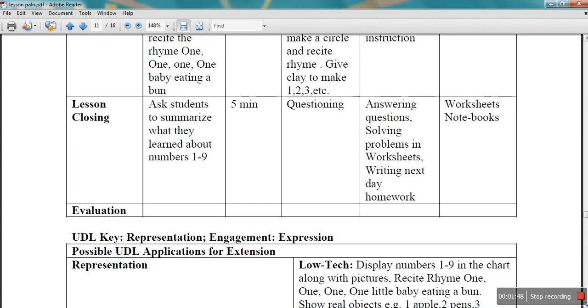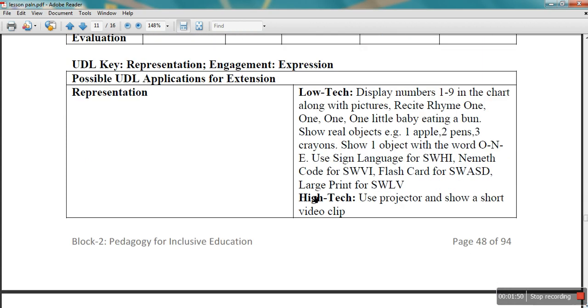Now this is with UDL added. But same topic represented differently. This is the additional material or resources the teacher is using. Low tech techniques which she will use: a chart displaying 1 to 9, then recite a rhyme like 1 1 1 1 1 little baby eating a bun. She will show real objects like 1 apple, 2 pens, 3 crayons. Then show one object with the word O-N-E, the spelling.